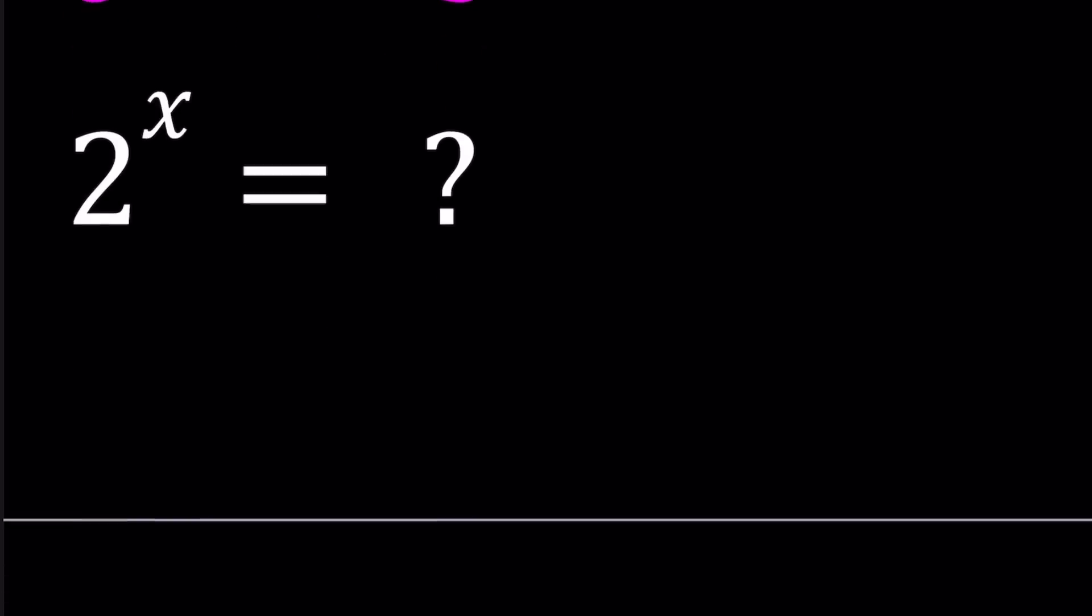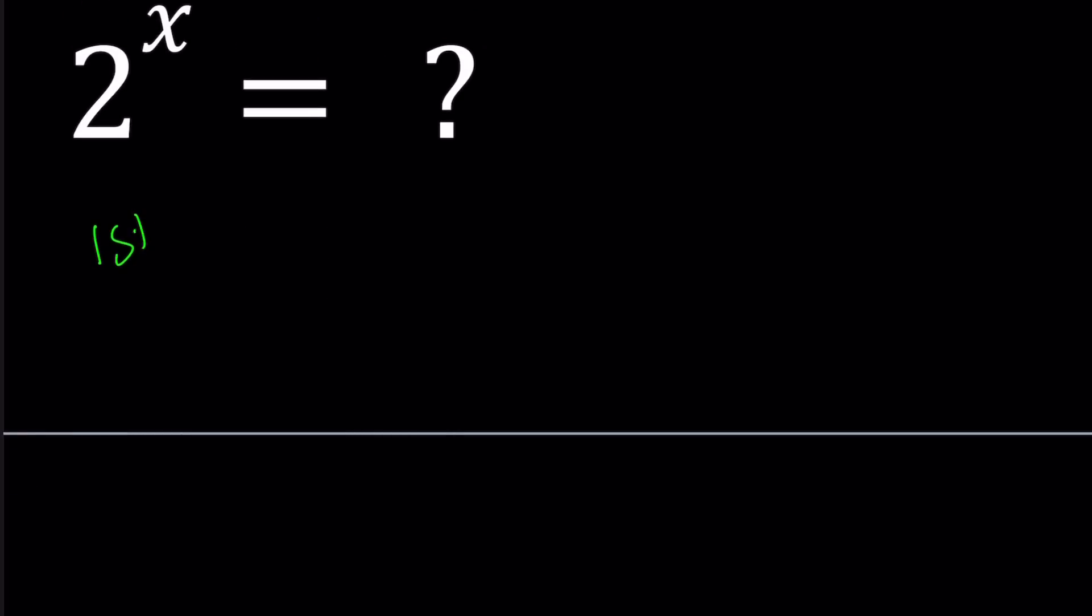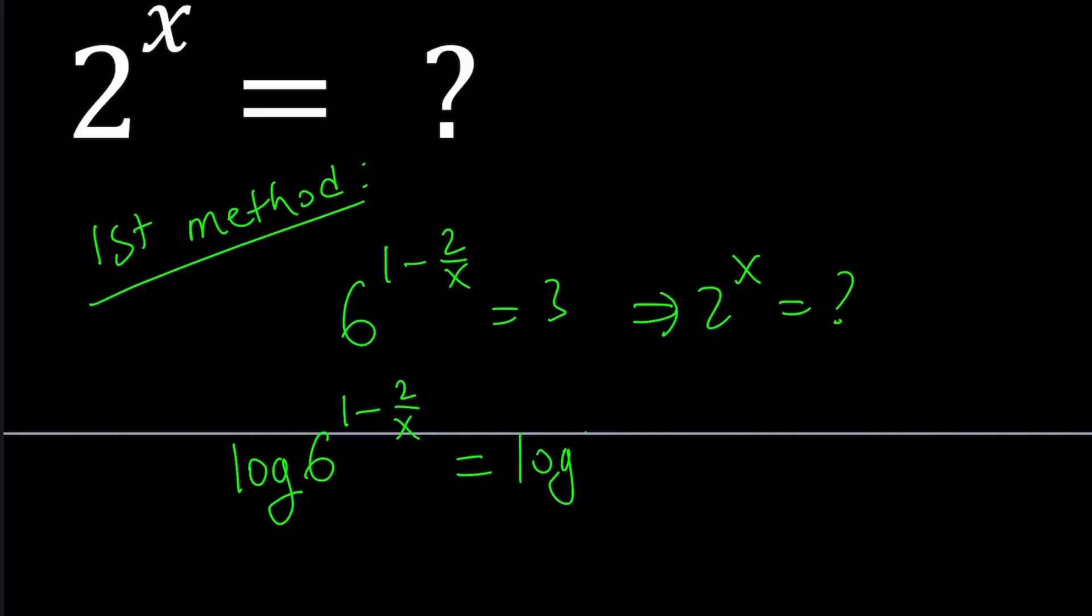So here's the first method. For my first method I'm going to do the following and let me rewrite the original problem. This is given and we're supposed to find 2 to the power x. So I'm going to go ahead and log both sides. You can use any base like base 6 or base 3 but I'm just going to use base 10. So log 6 to the power 1 minus 2 over x equals log 3. They're both in base 10.